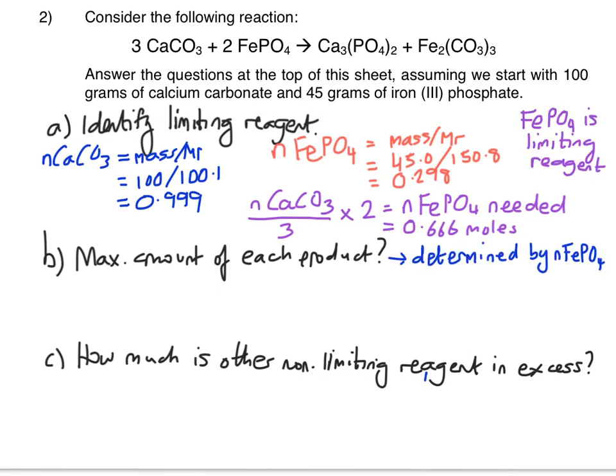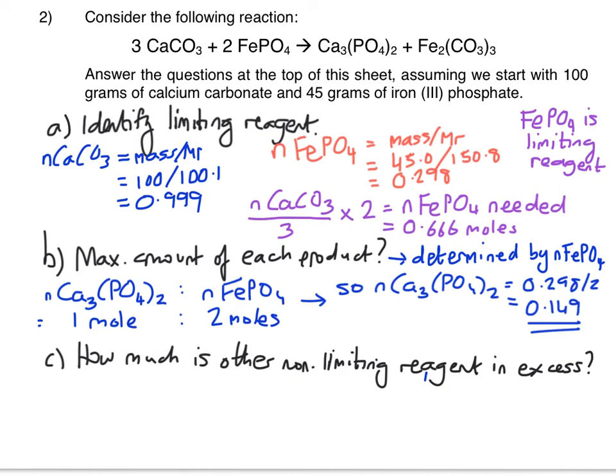So in the next question, we're asked for the maximum amount of each product. That's obviously now going to be determined by the amount of iron phosphate we've got available. So we start by looking at the mole ratios of iron phosphate to calcium phosphate. So obviously the number of moles of calcium phosphate that we get is half the number of moles of iron phosphate that we have, so our theoretical maximum amount of calcium phosphate will be 0.149 moles.